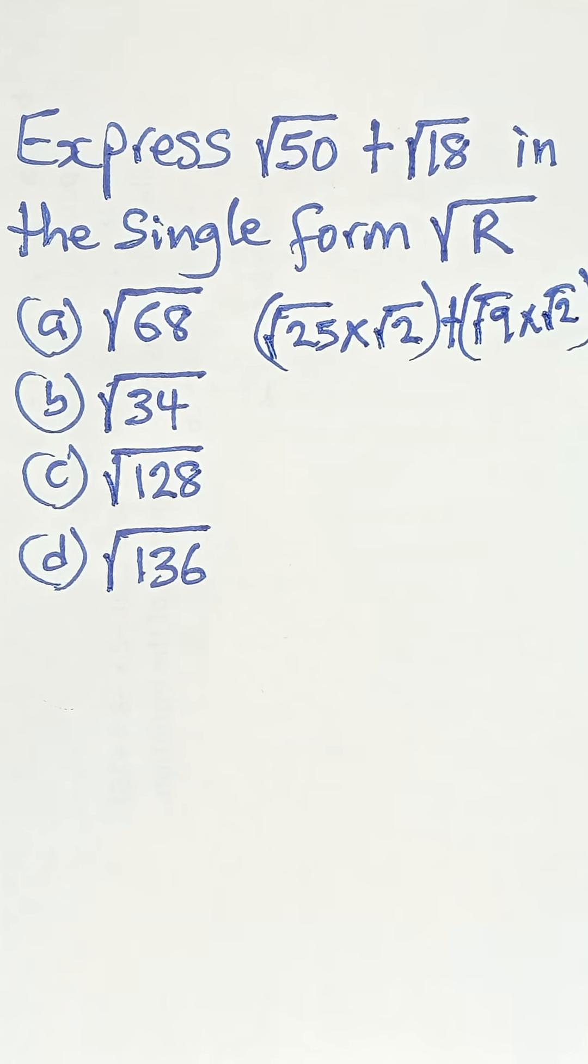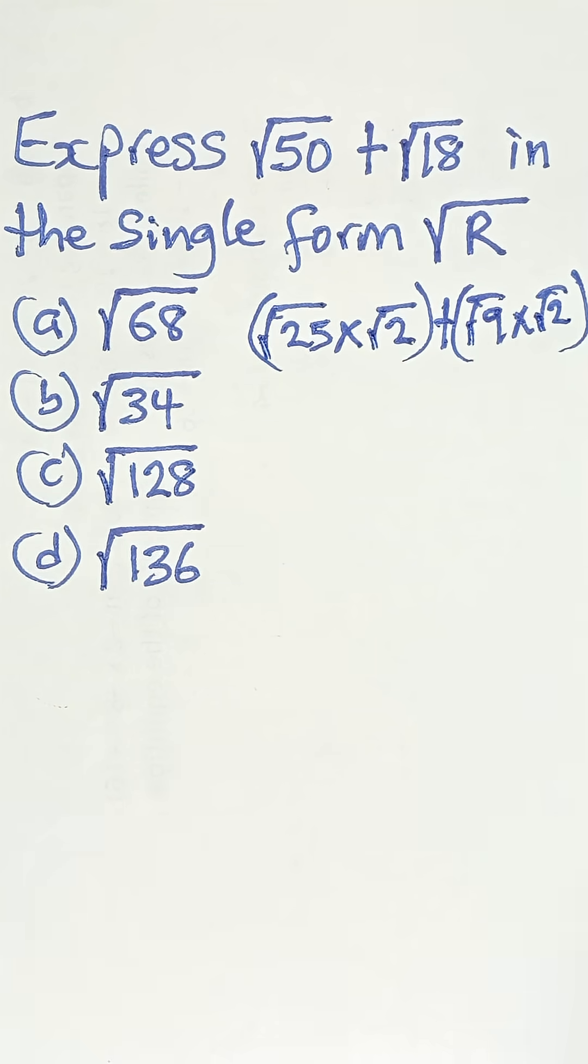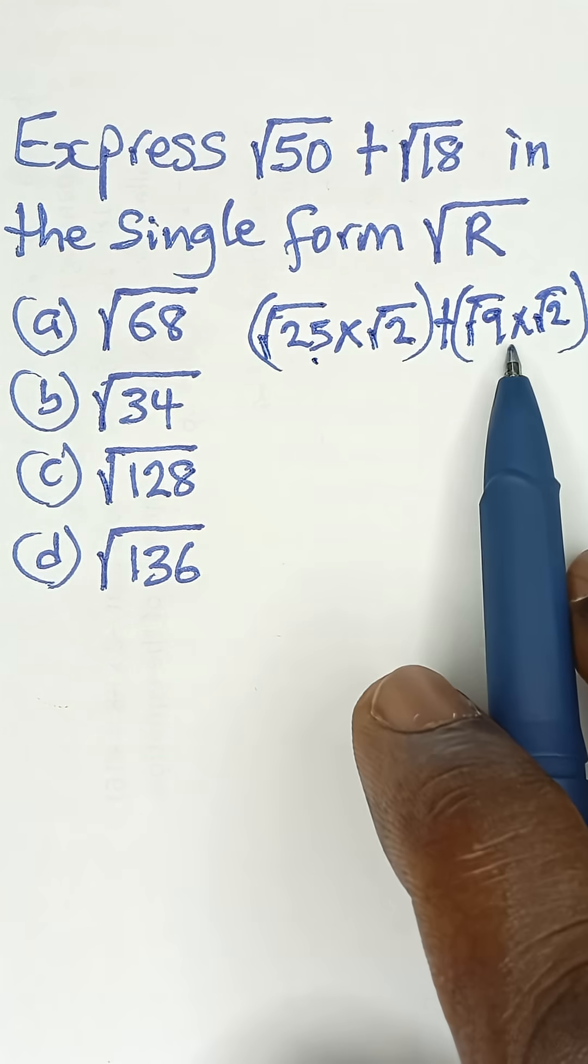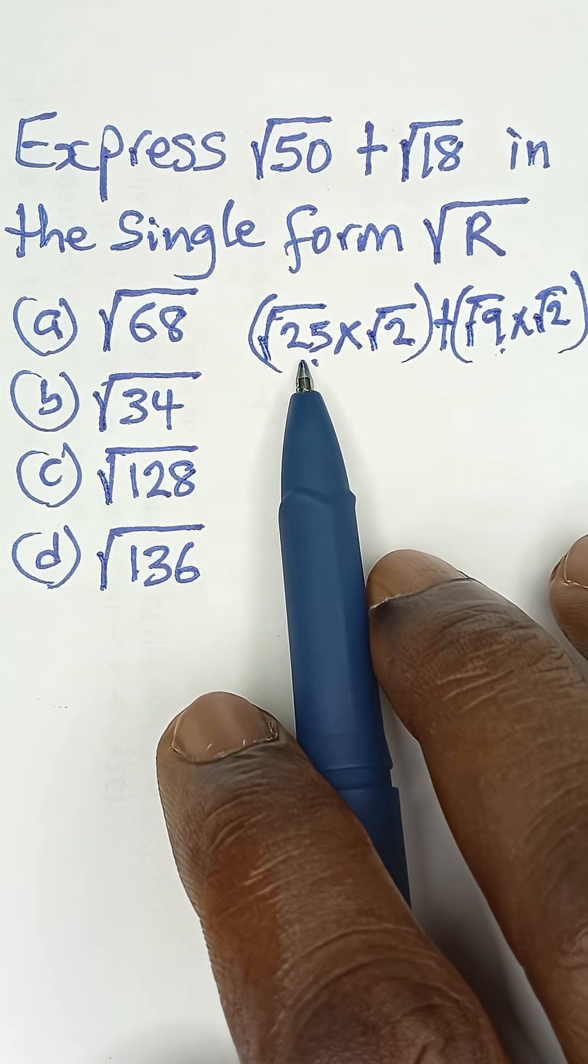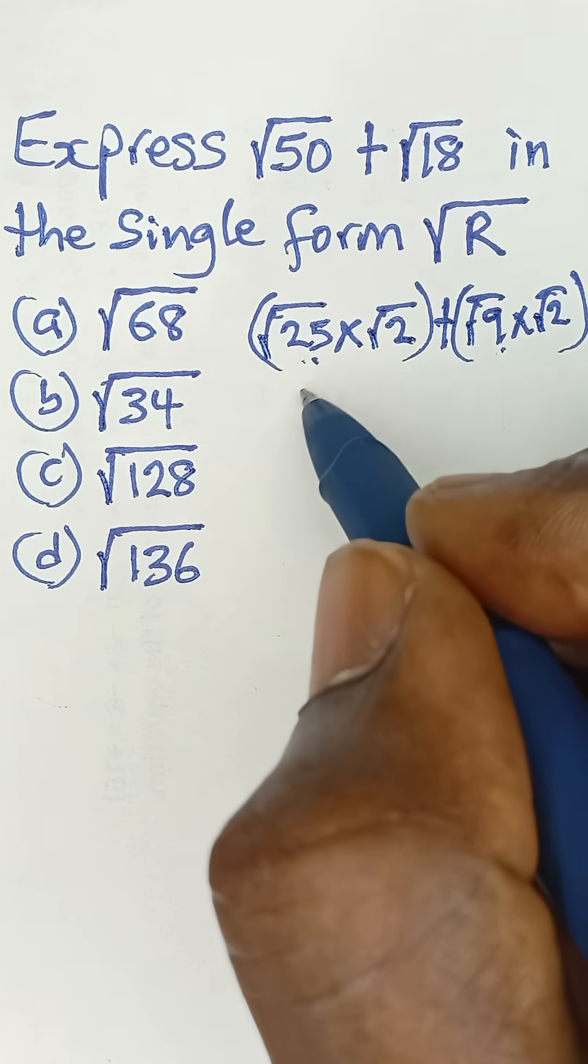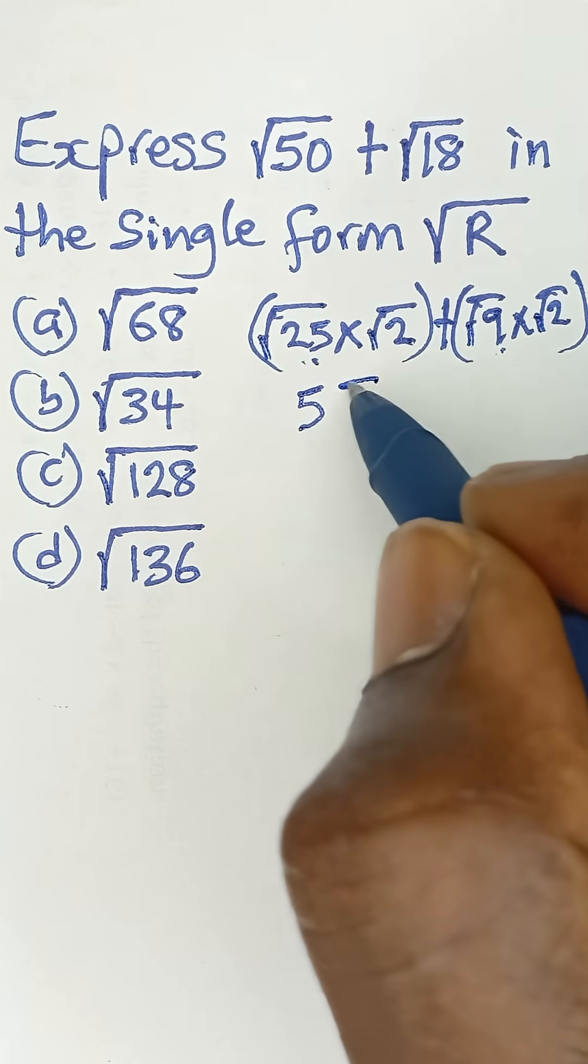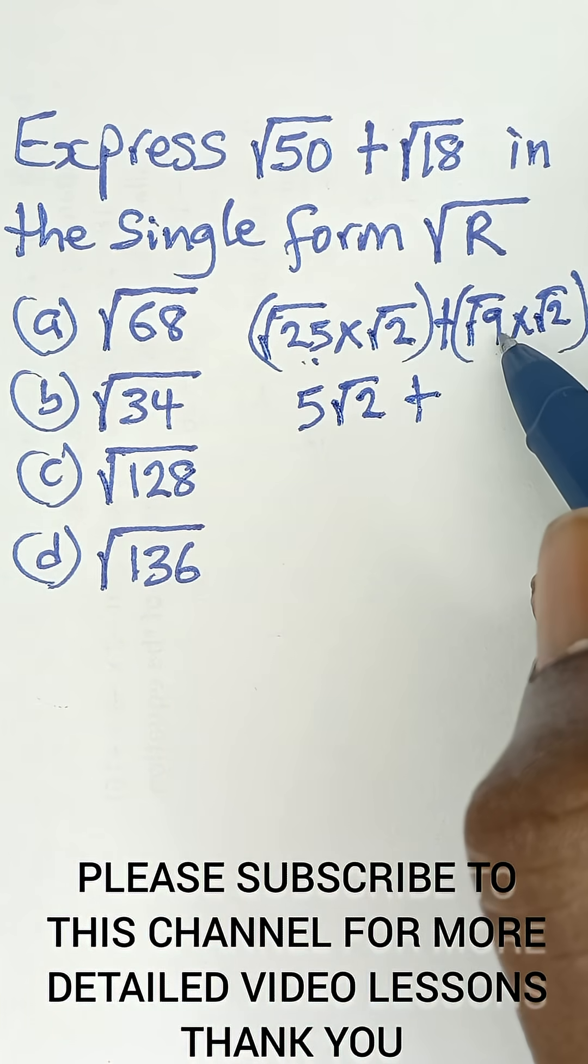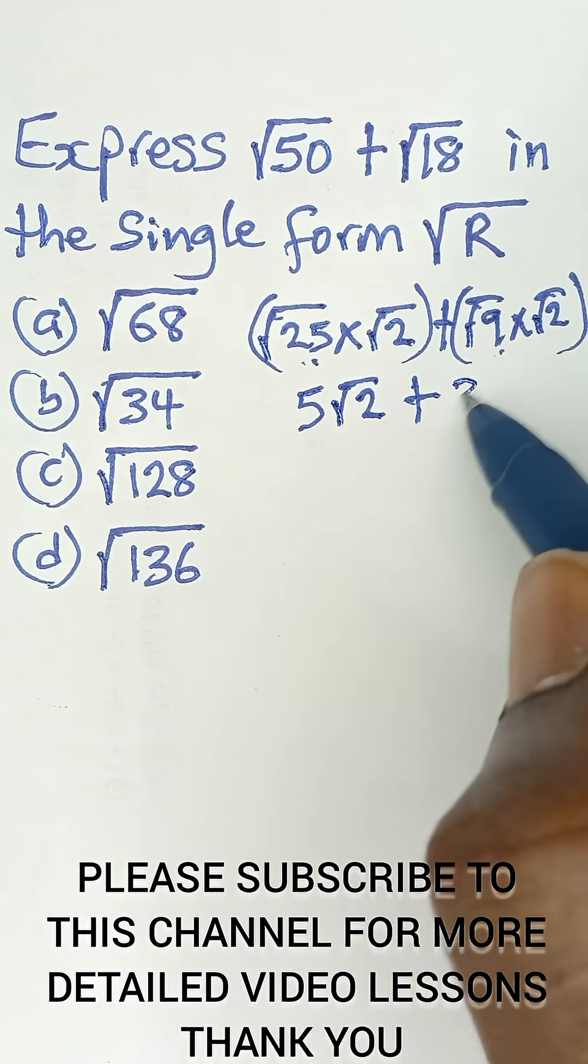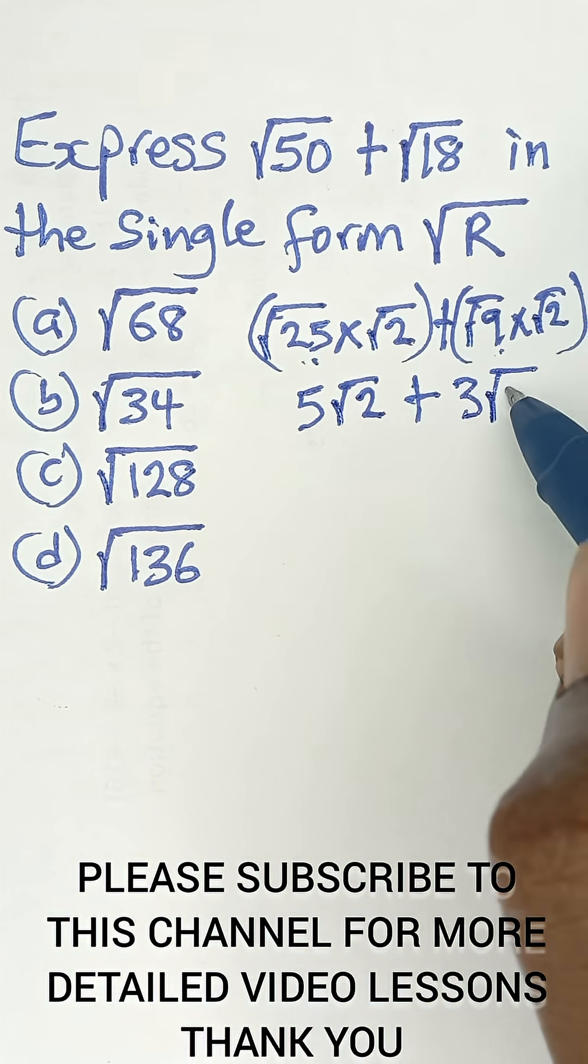Now that we are breaking them down, we need to take these values that are perfect squares. The square root of 25 is simply 5 multiplied by root 2, and the square root of 9 is 3 multiplied by root 2.